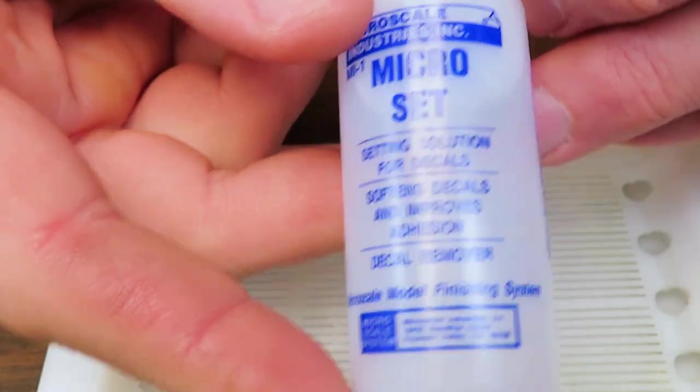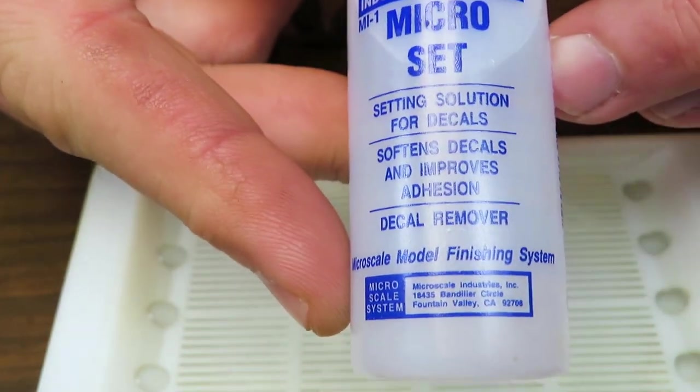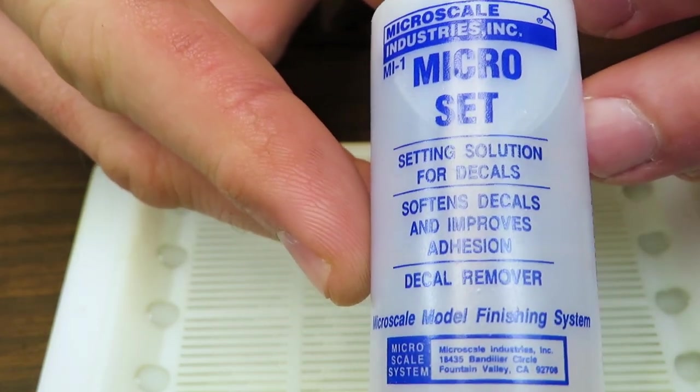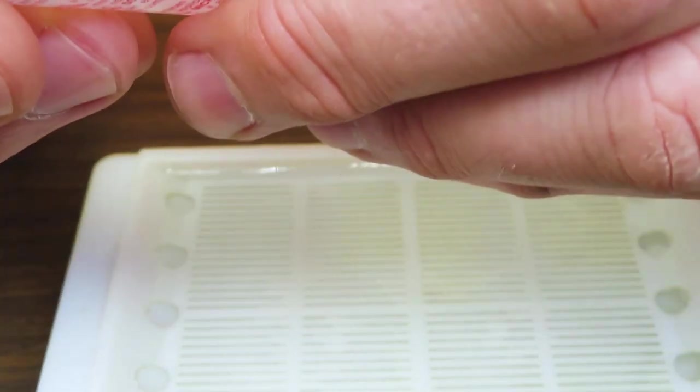The first thing you're going to set on your surface to be decaled is micro set. Now this helps soften up the decal when you put it on there and helps it adhere to the surface better. And then the next stage after that is dry is this is your stage two. This is micro sol.